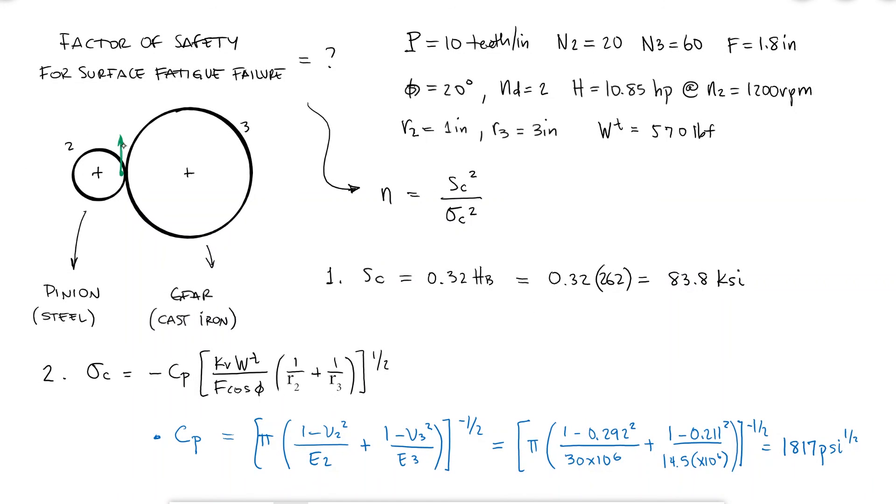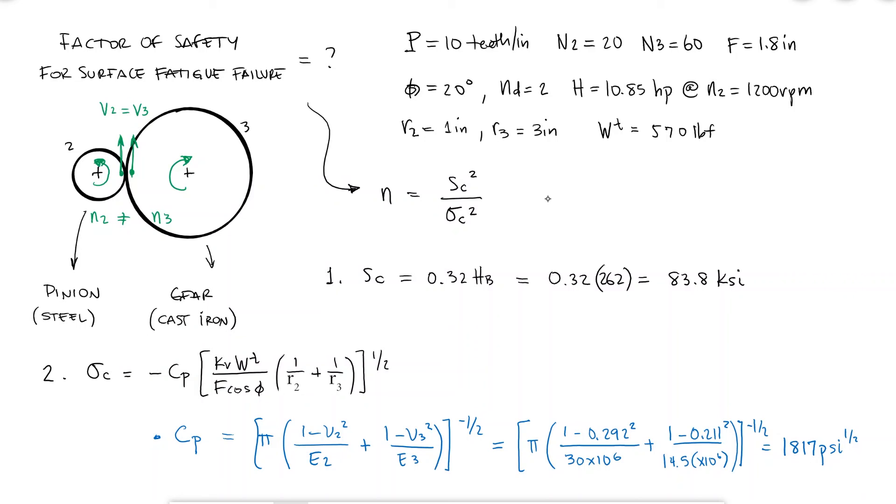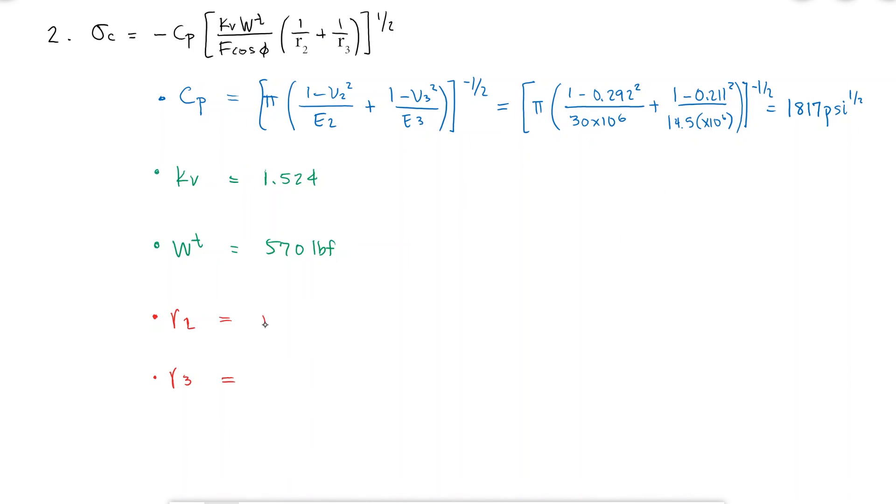It depends on the pitch line velocity of the teeth, which is the same for the teeth of both the pinion and the gear, despite them having different angular velocities. The tangential force had been found to be 570 pounds, and with the radii of the gears, we can find the radii of curvature.